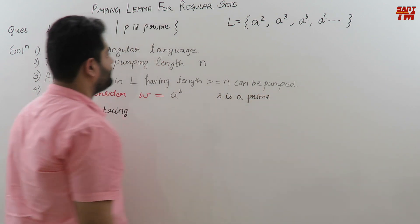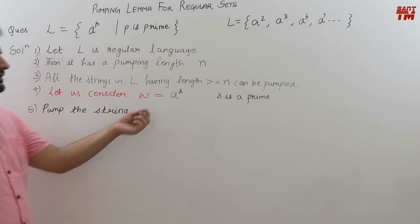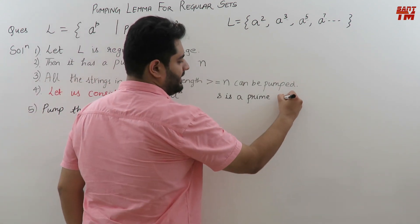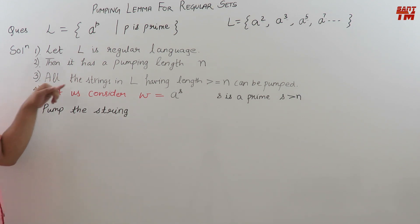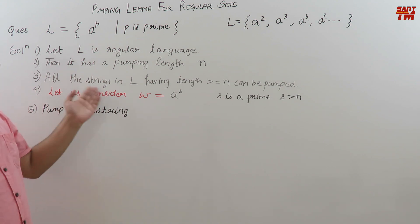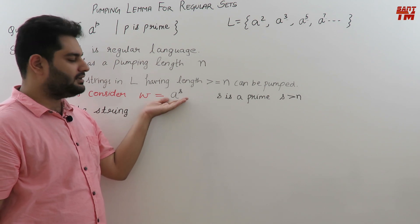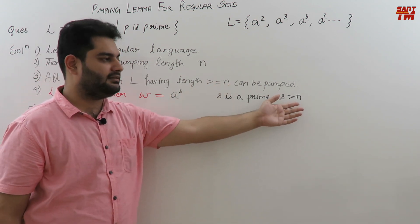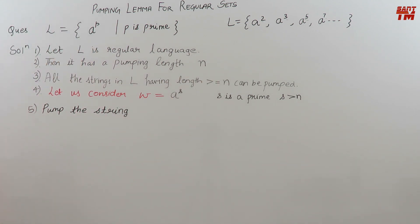Why must S be greater than N? Because all strings with length greater than or equal to N can be pumped, so following the rule of point 3, the length of our chosen string must be greater than the pumping length — that is why S is greater than N. The fifth point is we have to pump the string. In pumping, the first step is dividing the string into three parts X, Y, and Z. Our string is a raised to the power S, which has length S.